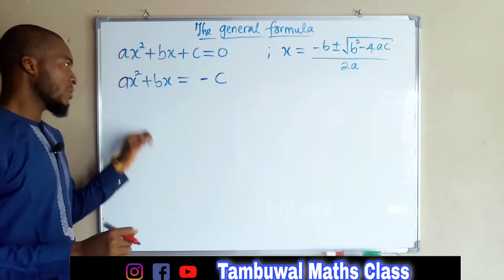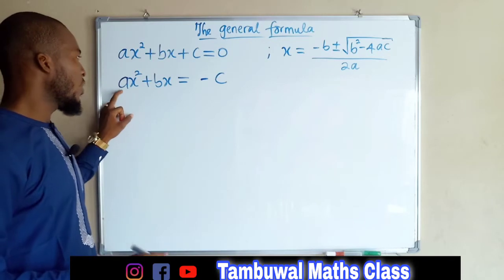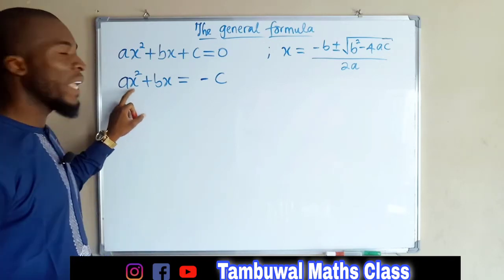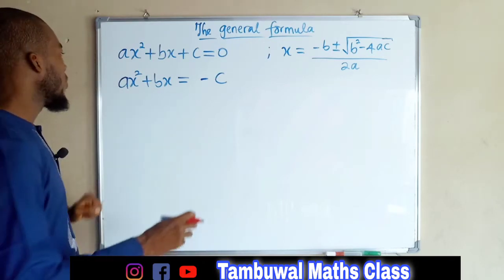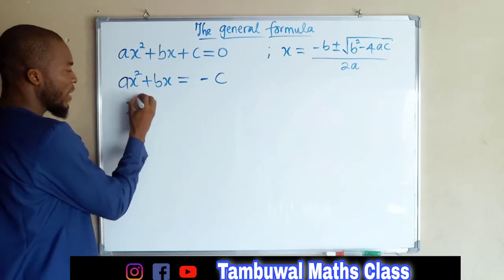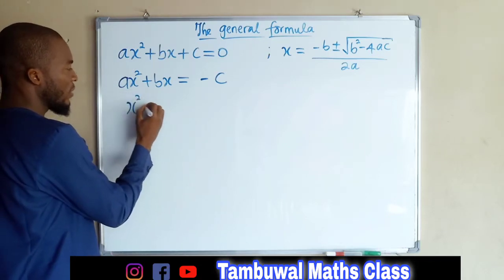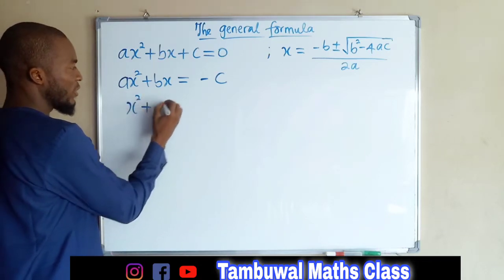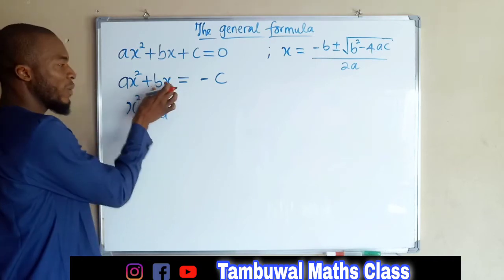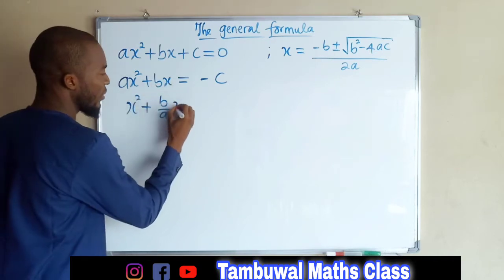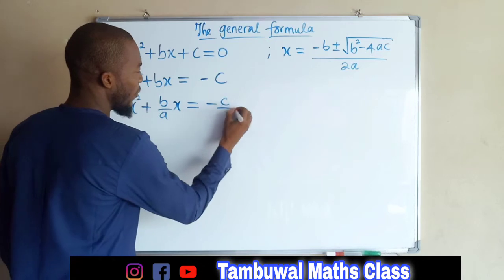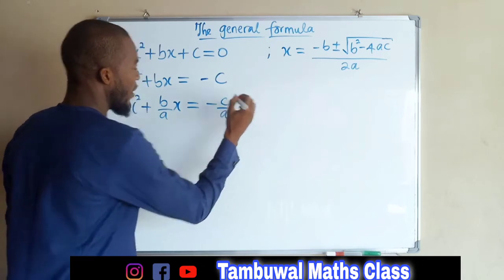And again, we are going to divide both sides by a because we need only x squared. After dividing by a, we have x squared plus b over a x, and this is equal to negative c over a.